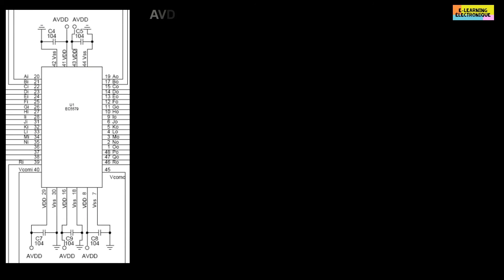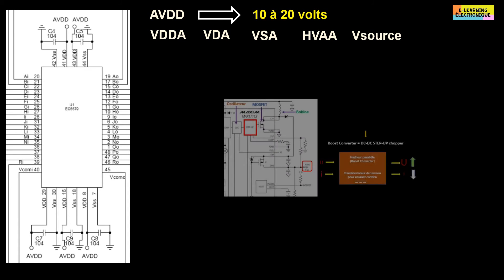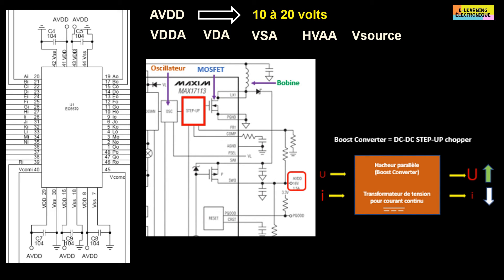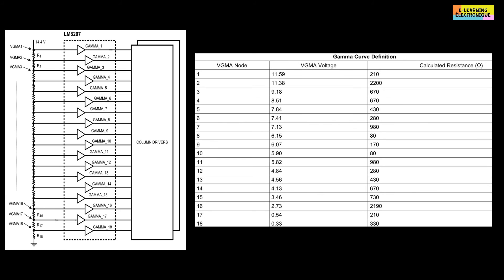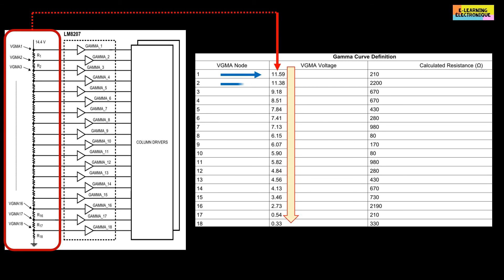Note that on technical documentation, the term AVDD can have other names like VDDA, VDA, VSA, HVAA, or V-source. In general AVDD has a value between 10 and 20 volts with a high amperage. As a reminder, the AVDD voltage is produced in the T-con board by the DDC converter thanks to a circuit called a boost converter. In practice, when measuring the gamma voltages on a T-con board, we must find different values between each voltage and this in a decreasing way. This logic comes from the voltage divider. The very first voltage is the highest, then the next voltage is lowered by another resistor and so on until the last resistor of the voltage divider. Of course, if we take the measurements in the other direction, the values will increase.